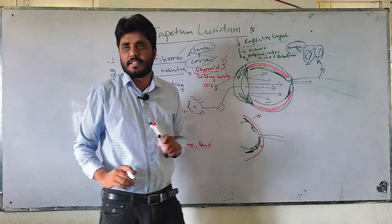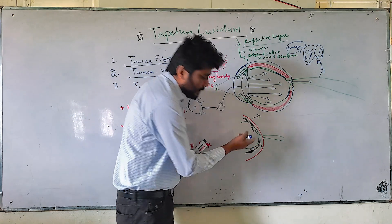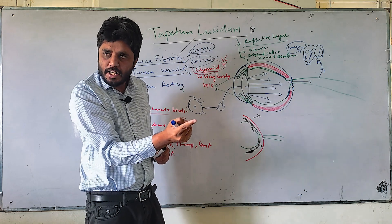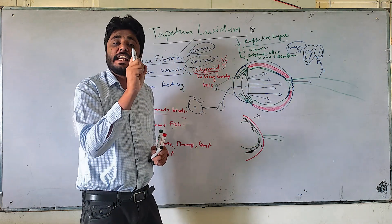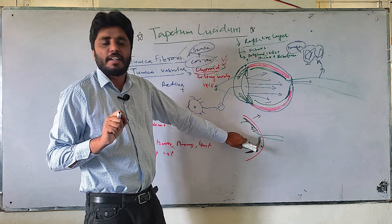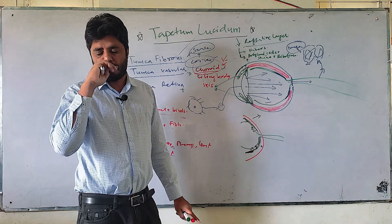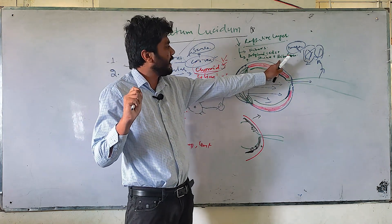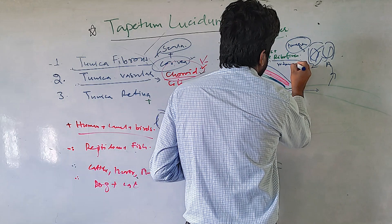Because photons may be fewer or distributed across different areas, not all photons are going to hit the photoreceptors. So if they pass through the retina without being absorbed, the tapetum lucidum reflects them back. Due to this reflection, the photoreceptors have one more chance to do absorption again.